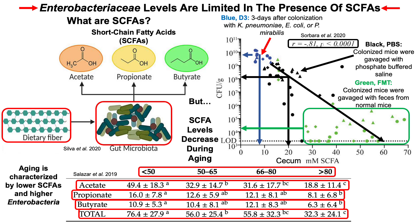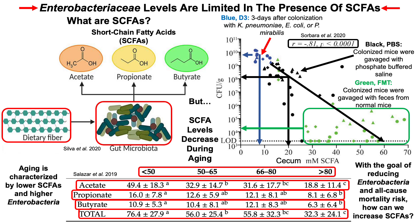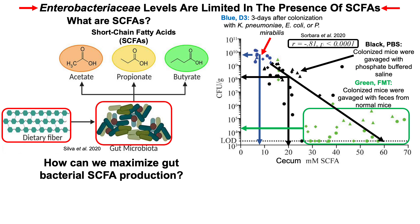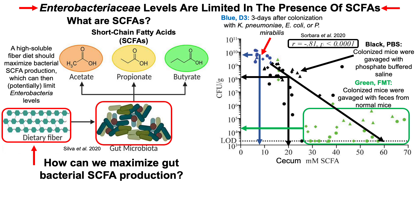From this we can conclude that aging is characterized by lower levels of short-chain fatty acids and higher enterobacteria. With the goal of reducing enterobacteria and all-cause mortality risk, the main focus should be on increasing short-chain fatty acid levels. A major way to do that is by having a high-soluble fiber diet, which should maximize gut bacterial short-chain fatty acid production. However, there are no randomized controlled trials in older adults that have tested this hypothesis — if anyone has found such studies, please leave a comment.